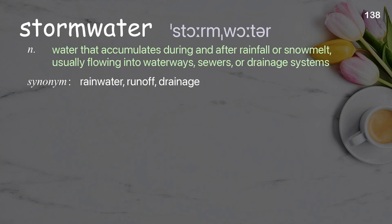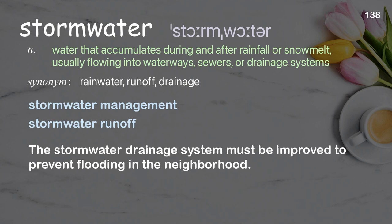Stormwater: Water that accumulates during and after rainfall or snowmelt, usually flowing into waterways, sewers, or drainage systems. Examples: Stormwater management. Stormwater runoff. The stormwater drainage system must be improved to prevent flooding in the neighborhood.